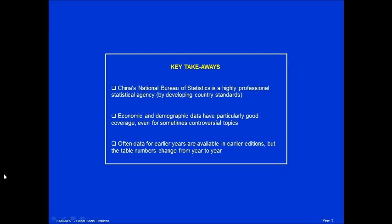Key takeaways. First, China's National Bureau of Statistics is a highly professional statistical agency by developing country standards — it may not stand up to the U.S. Census Bureau or Eurostat, but compared to any other developing country it's a fantastic outfit. Second, economic and demographic data have particularly good coverage in the NBS annual data book. Third, data for earlier years are often available in earlier editions, but the table numbers change from year to year, so it can take a little bit of work to go back and reconstruct data series for multiple years.